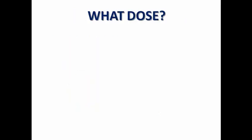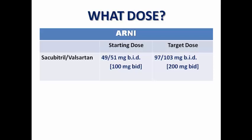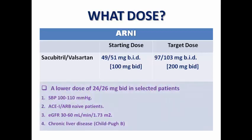What dose do we start with? We usually start with 100 mg twice per day, aiming for a target dose of 200 mg twice per day. A lower starting dose of 50 mg twice per day is used in selective situations: borderline low systolic blood pressure, ACE or ARB-naive patients, estimated GFR between 30 and 60, or chronic liver disease Child-Pugh class B. It is preferred not to split the tablet, as this is a combination medication and splitting may compromise its efficacy.